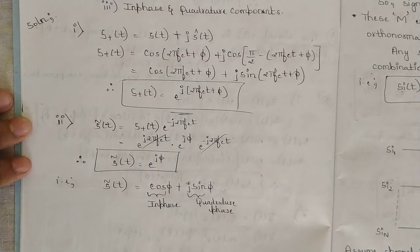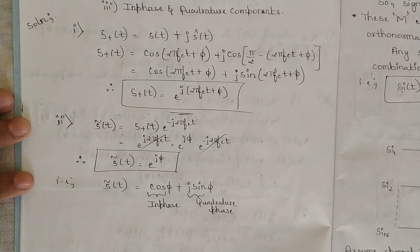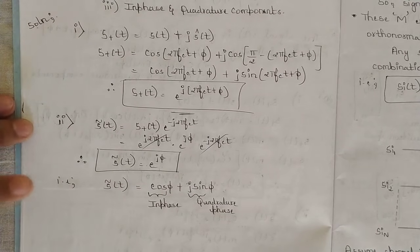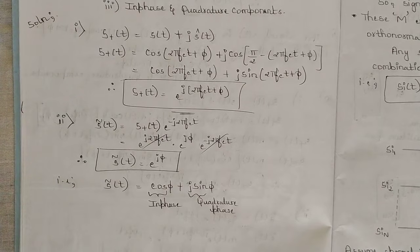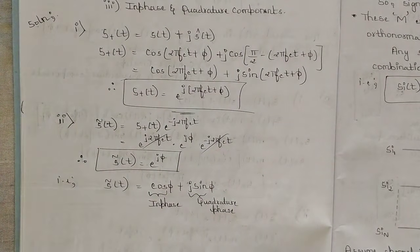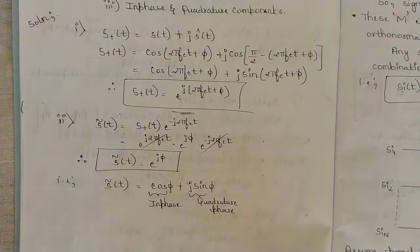Expanding e^(jφ) = cos φ + j sin φ gives the in-phase component cos φ and quadrature component sin φ. These are the basic problems from the first part of Module 1 that might be asked as sub-questions in the exam, so please note them down. In the next video we'll discuss other concepts related to Module 1 — stay tuned, thank you.